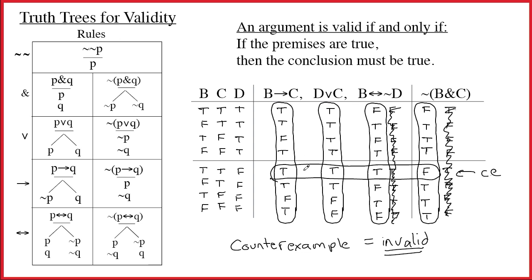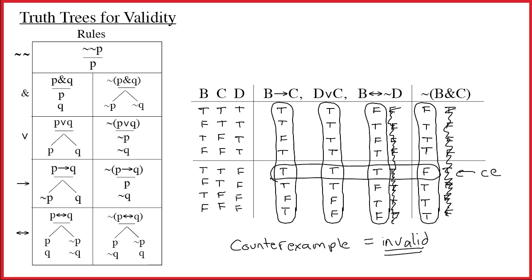The tree method also focuses on counterexamples. Validity is about preserving truth — if you start with truth and go to falsity, that's always a bad thing for an argument. When we're constructing a tree, we're going to hone in on the counterexample. To construct a tree for this argument, let's get set up.